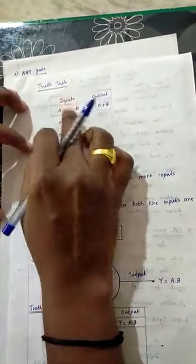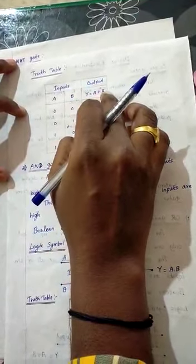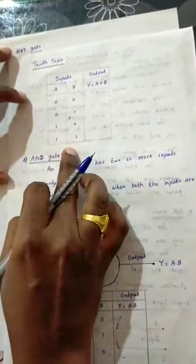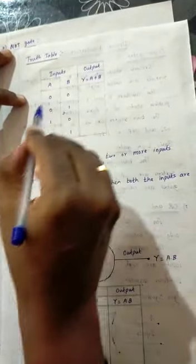Truth table. Unmai at wane inputs. A and B two inputs, output y equal to a plus b. 00, 01, 10, 11.